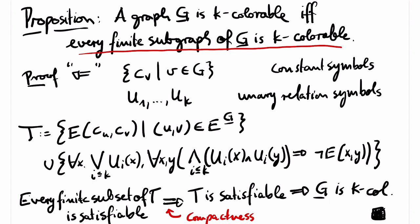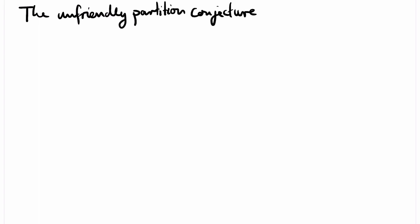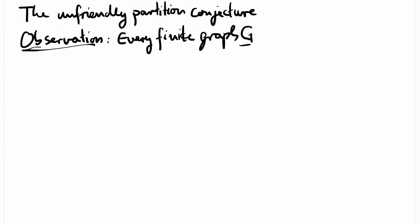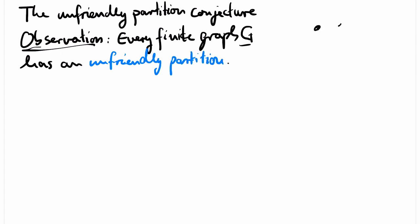We have to be careful with applications of the compactness theorem. There are some statements that almost look like they could follow from compactness, but they don't. There is, for example, the so-called unfriendly partition conjecture. We start with the observation that every finite graph has an unfriendly partition — a partition of the vertices such that every vertex has at most as many neighbors in its own part as it has neighbors in the other part.